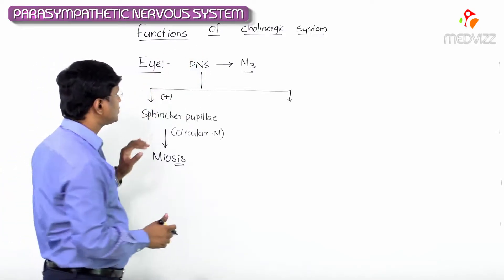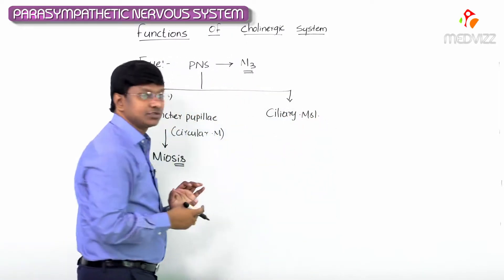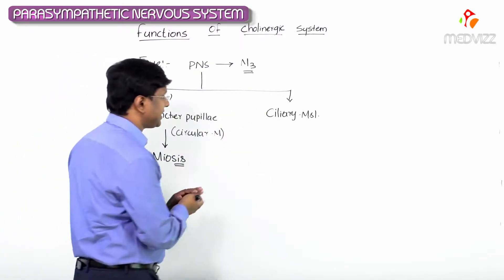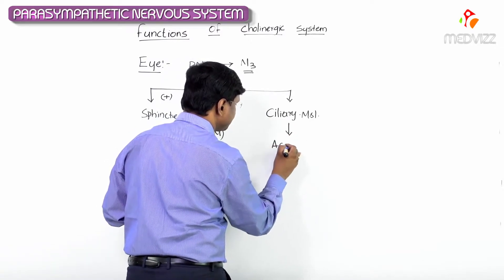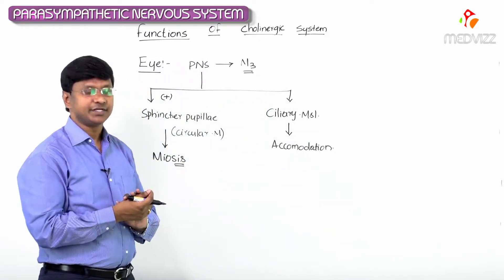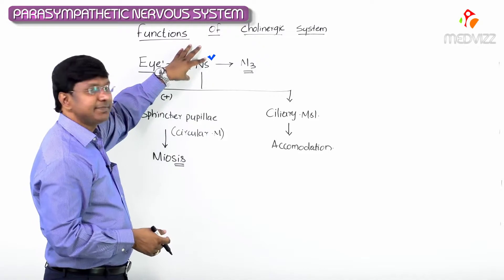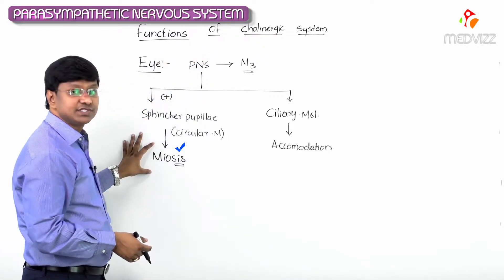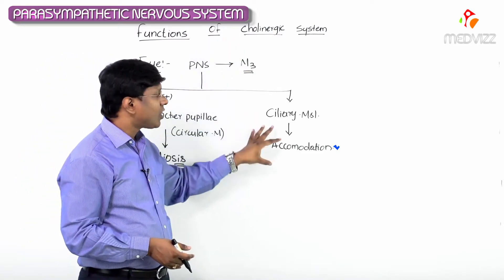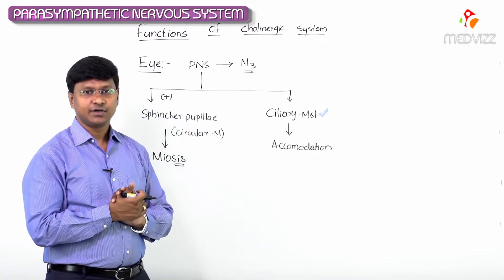The parasympathetic nervous system — that is acetylcholine — can also cause contraction of the ciliary muscle. Once there is contraction of the ciliary muscle of the eye, that will result in accommodation. So what you have to remember is: parasympathetic nervous system will cause miosis by activating the sphincter pupillae, and will result in the accommodation reflex due to contraction of the ciliary muscle.